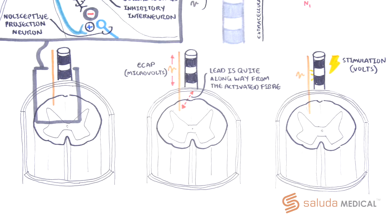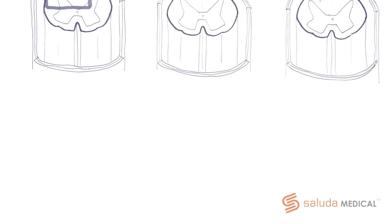The evoked closed loop spinal cord stimulation system is able to measure ECAPs in either direction, as they pass beneath the contacts on the epidurally placed lead, propagating away from the stimulus.